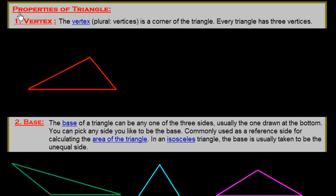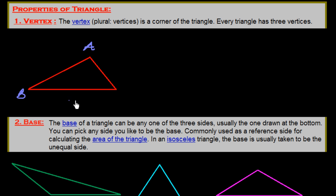Now let's explain the properties of a triangle. The first property is about the vertex. The plural of vertex is vertices. A vertex is a corner of the triangle. Every triangle has three vertices: vertex A, vertex B, and vertex C.